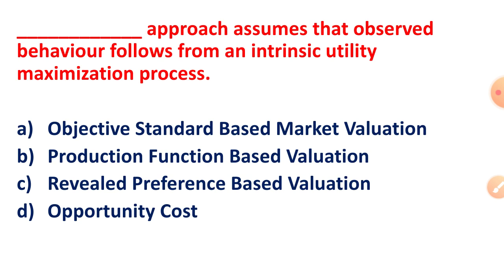This approach assumes that observed behavior follows from an intrinsic utility maximization process. The right answer is Option C: revealed preference-based valuation. This is an important question from an exam point of view.